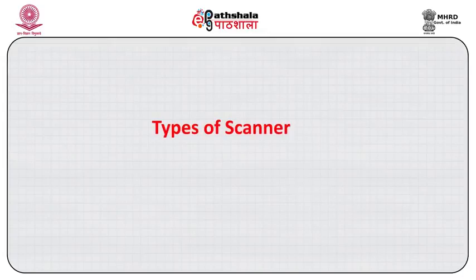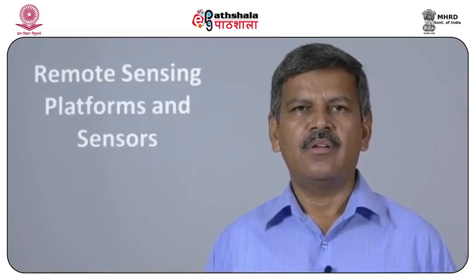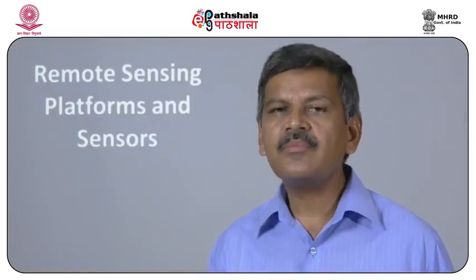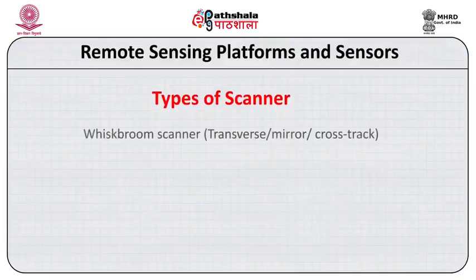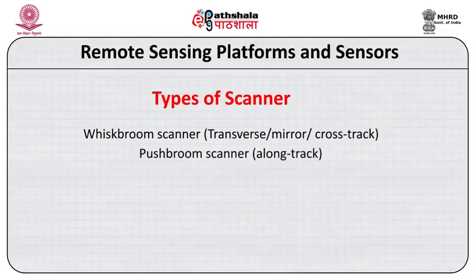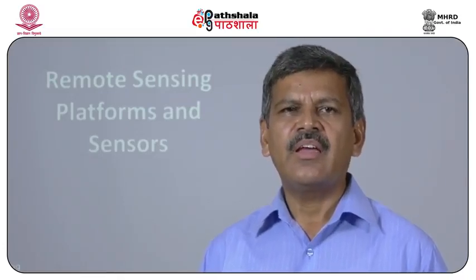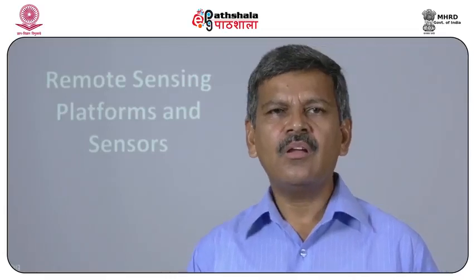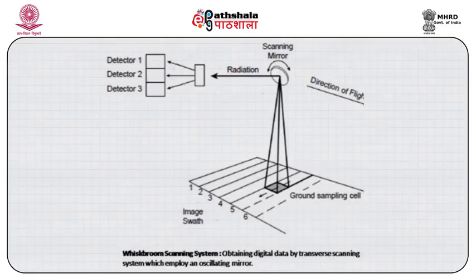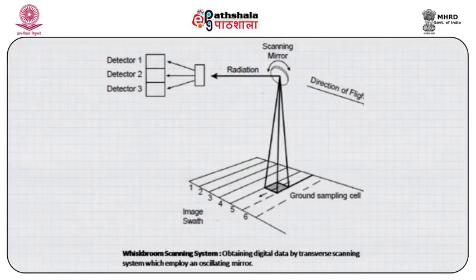Now come to the types of scanner. Scanners are classified into two types: one is across-track and the second one is along-track. In across-track scanning, the sensor scans the earth across the track using a rotating mirror. The earth surface is scanned line by line, with the scanner scanning from the beginning point to the end point. The IFOV is low, meaning spatial resolution is very high.